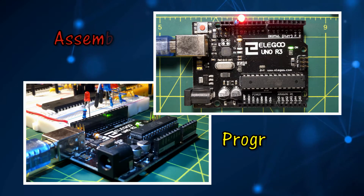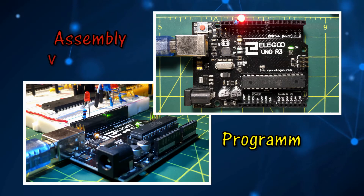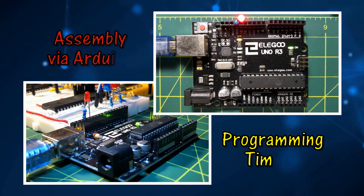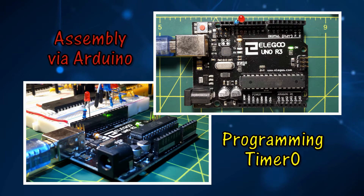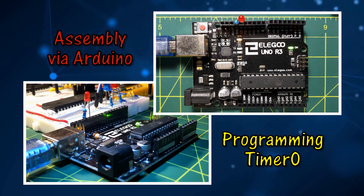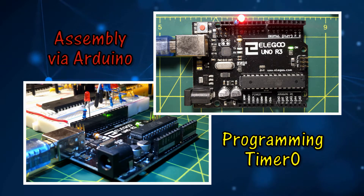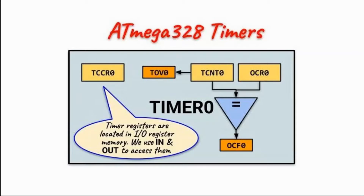In this video, AVR assembly is used to program timers of the ATmega328 microcontroller, where different applications will be demonstrated. The ATmega328 has three timers: two 8-bit and one 16-bit timer. We start with Timer 0, which is an 8-bit timer, and it has the following programmable registers.